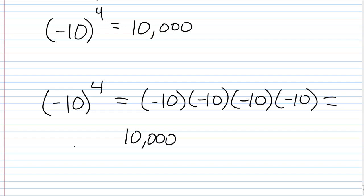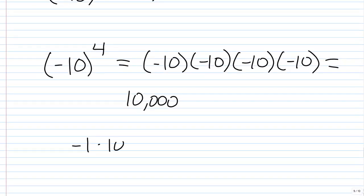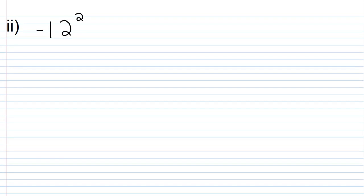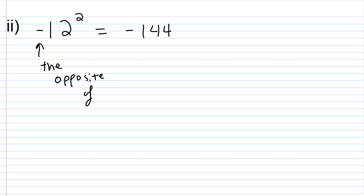Another way to see this: negative 10 equals negative 1 times 10, and since it's in parentheses, we apply the exponent to both: negative 1 to the fourth power is 1, and 10 to the fourth power is 10,000, giving 10,000. For part two, we have negative 12 squared with no parentheses. 12 squared is 144, and we want the opposite, so the answer is negative 144.